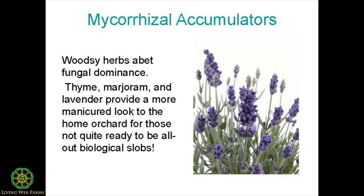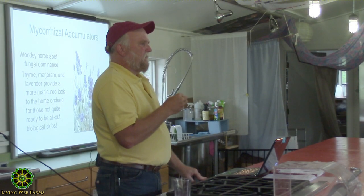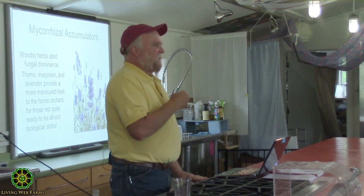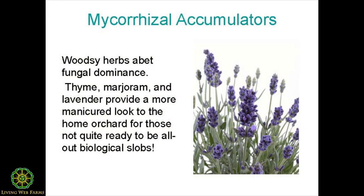For those who want a more manicured look around their fruit trees, there are plants with a similar mycorrhizal affiliation — woodsy in nature — like rosemary, marjoram, thyme, and lavender. These are all woodsy plants that if you add compost or a smattering of ramial wood chips, they stand up to that. So you can achieve a certain aesthetic while using plants that work with the same mycorrhizae.